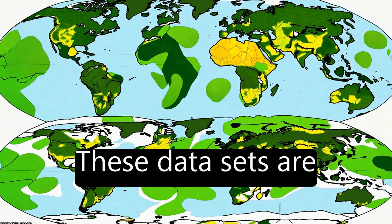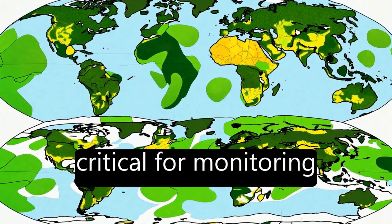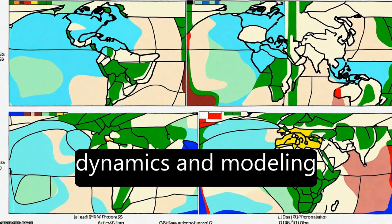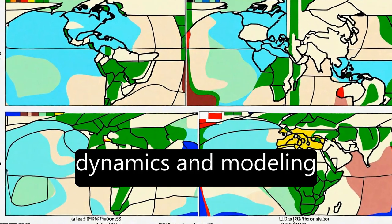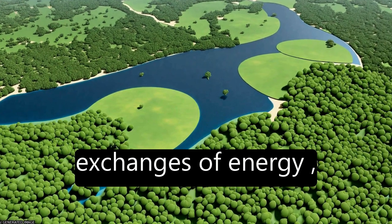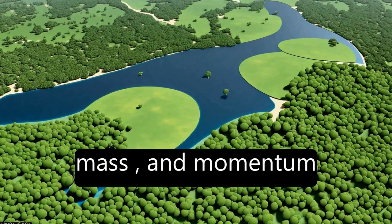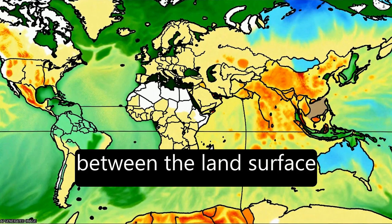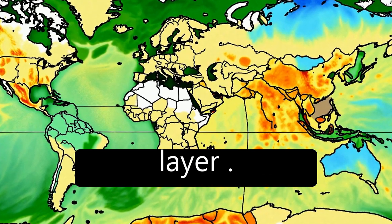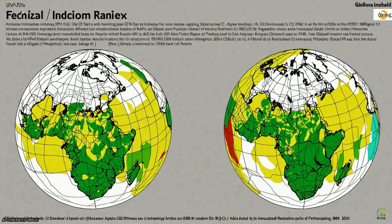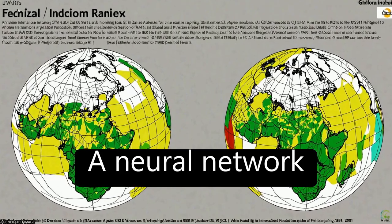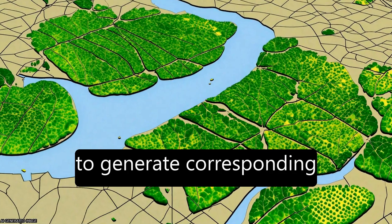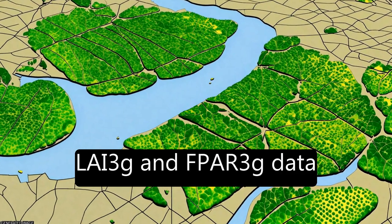These data sets are critical for monitoring global vegetation dynamics and modeling exchanges of energy, mass, and momentum between the land surface and planetary boundary layer. A neural network algorithm was developed to generate corresponding LAI-3G and FPAR-3G data sets.